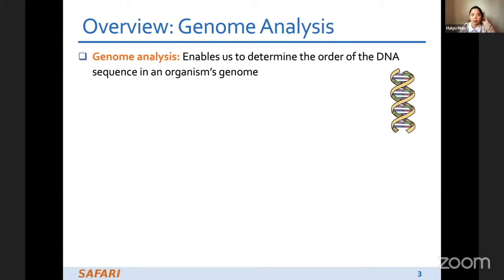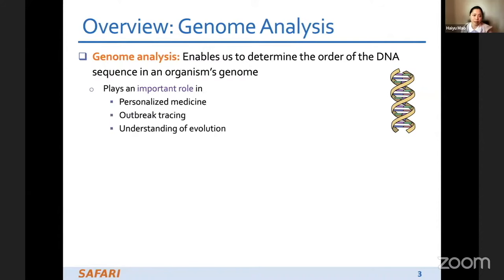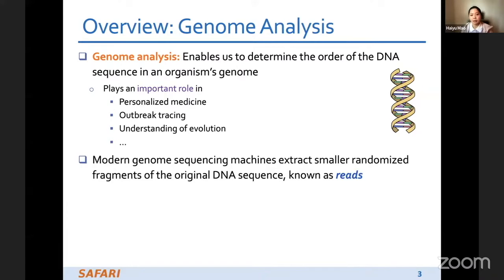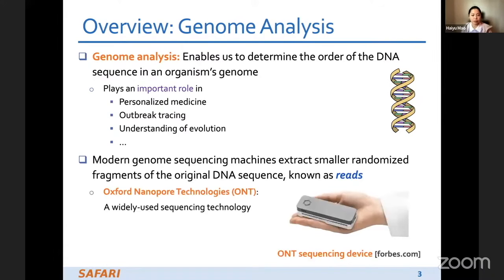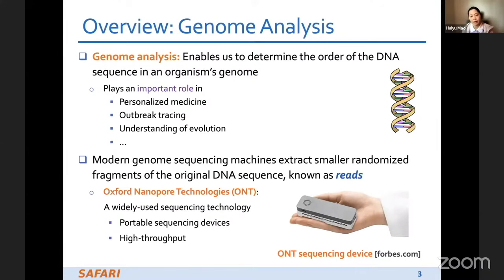Genome analysis enables us to determine the order of the DNA sequence in an organism's genome. It plays an important role in personalized medicine, outbreak tracing, understanding evolution, and so on. Modern genome sequencing machines extract smaller randomized fragments of the original DNA sequence, known as reads. This project mainly focuses on Oxford Nanopore Technologies, known as ONT.